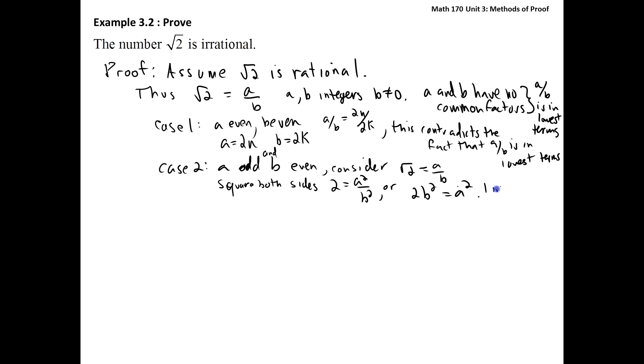This means that a squared is even. And we saw from earlier that if a squared is even, then we can conclude that a is even. This is a contradiction. We assume that a was odd. This contradicts the fact that a was odd. So basically, if we assume that a is odd, we're always going to come to this contradiction.